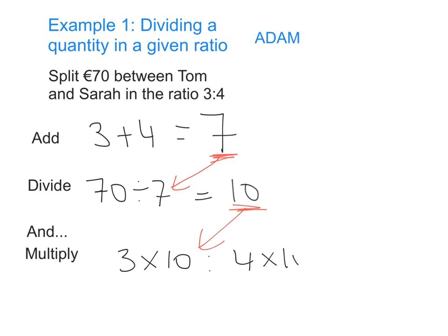So therefore Tom is going to receive 30 euro and Sarah is going to receive 40 euro.